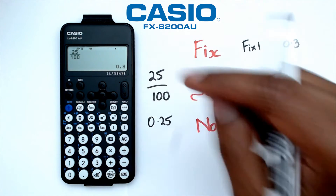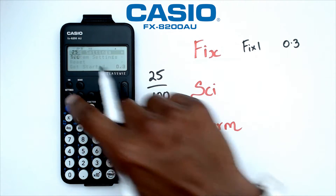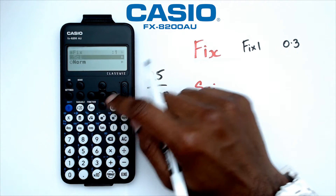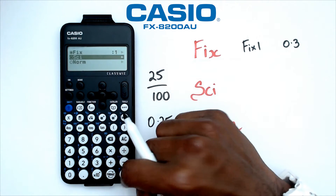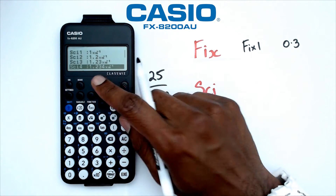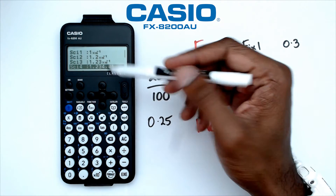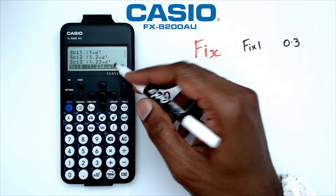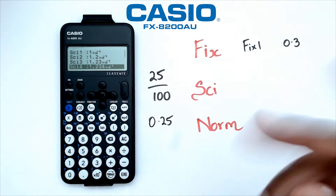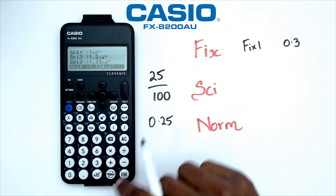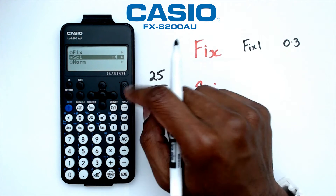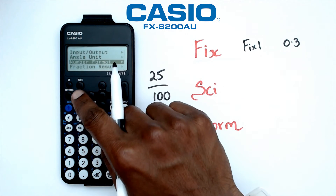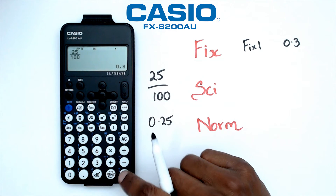What I do know is that when I go into settings and go into number format and go into the SCI format — let's say I go with SCI 4 — that's basically four significant figures, written times by 10 to the power of negative or positive whatever it is.